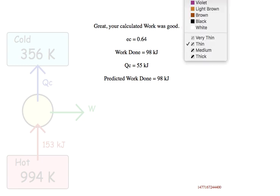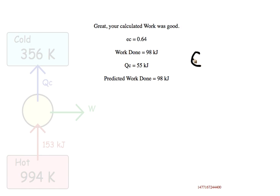If you want to figure out the efficiency of your engine, we can do this simply by doing efficiency equals our work that we got out versus the heat that we put in. The work we got out was 98. The heat that we put in was 153. And that works out to an efficiency of about 64%.